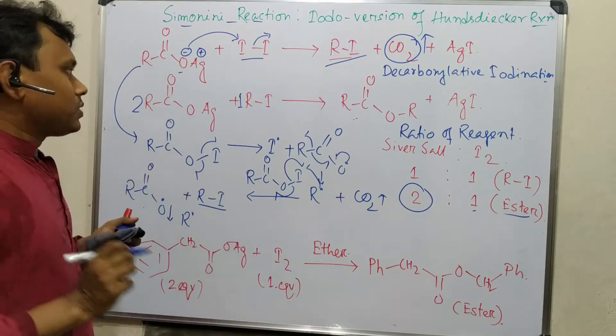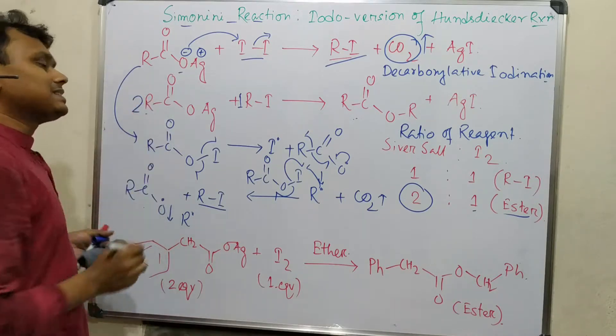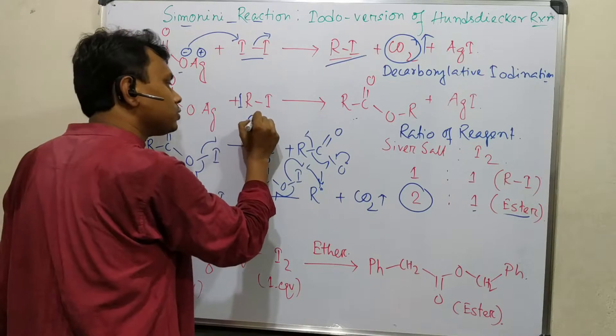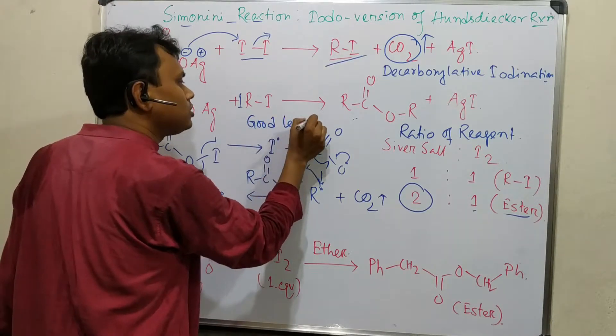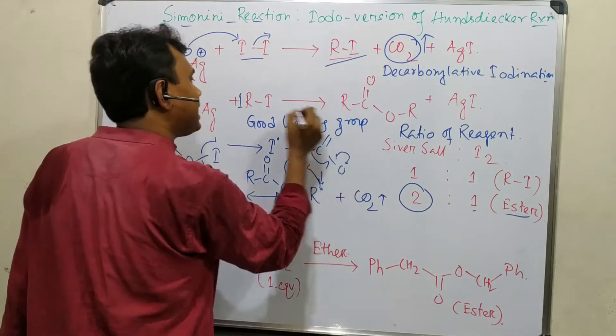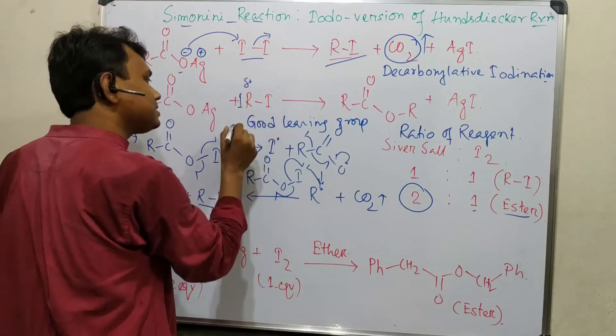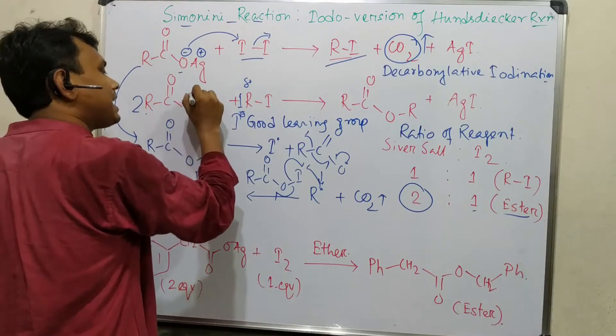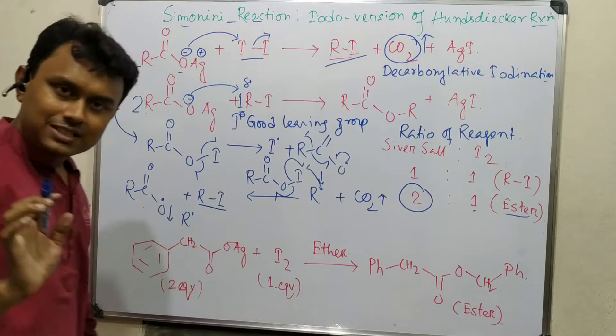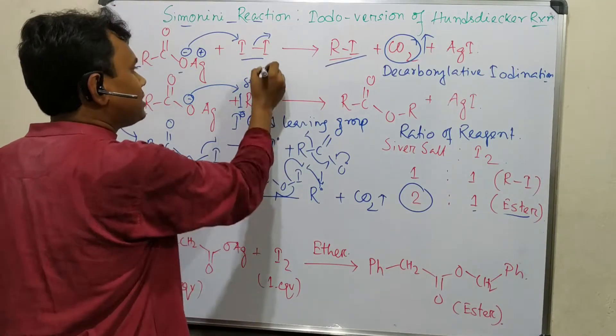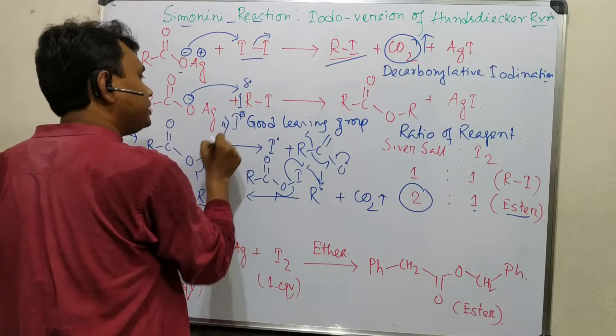Now what is the problem if you take excess reagent? As we know, iodide is a good leaving group. So alkyl iodide is a good electrophile. Consequently this can be attacked. Another important point is that silver eliminates iodide as silver iodide.